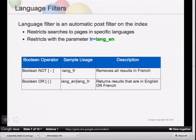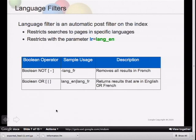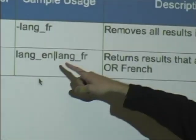For language filtering, there's a parameter that gets sent over. By default it's lr equals lang_en. It shows two-character codes for various languages — es for Spanish, jp for Japanese. You can also run Boolean NOT expressions using a dash in front, or use an OR expression to get documents in English or French.